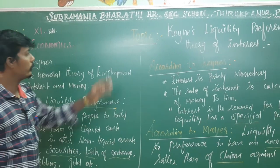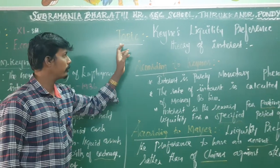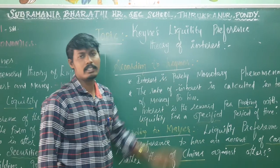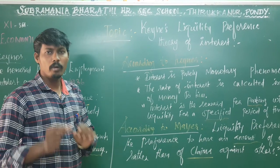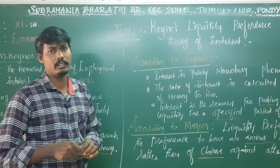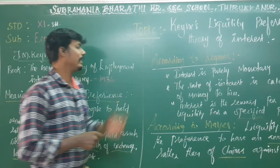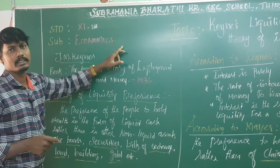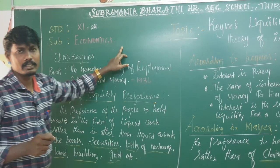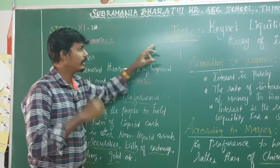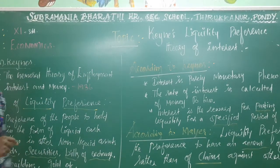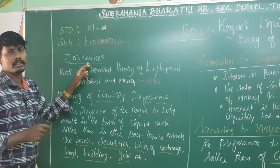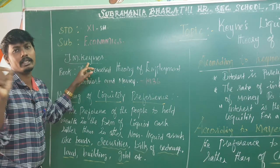Dear students, now we are going to cover the topic of Keynes' Liquidity Preference Theory of Interest, also known as the Monetary Theory of Interest. According to Keynes, this falls under Chapter 6, Distribution Analysis. The theory is attributed to John Maynard Keynes, known in short as J.M. Keynes.